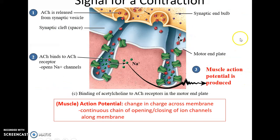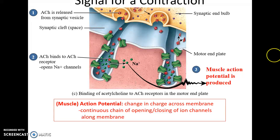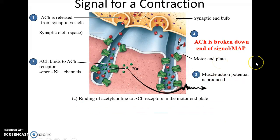The acetylcholine released into the synaptic cleft diffuses across and binds to acetylcholine receptors. When bound to acetylcholine, these receptors open sodium ion channels. Positively charged sodium ions flood into the muscle fiber, and if enough channels are opened and enough sodium ions enter, this generates a muscle action potential — a change in charge across the membrane from the opening and closing of ion channels.